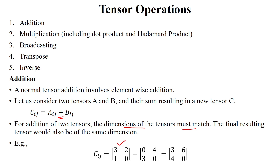For example, tensor A has a 2 by 2 dimension and tensor B also has a 2 by 2 dimension. Then, we perform element-wise addition: 3 plus 0 equals 3; the element in the second position of the first row in tensor A and the second column of the first row in tensor B is added — 2 plus 4 equals 6. Similarly, the second row, second column of the first tensor and the second row, second column of the second tensor are added: 0 plus 0 equals 0.